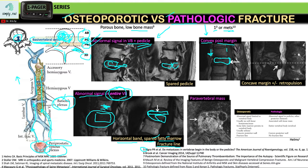You can compare that to the adjacent vertebral bodies, which are straight or a little bit concave like this. On the other hand, if you have an osteoporotic fracture in which you have low bone mass, you will have a concave margin because you have no increase in number of neoplastic cells. And sometimes you can see a retropulsion because of that fracture.